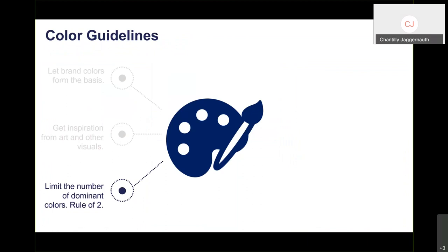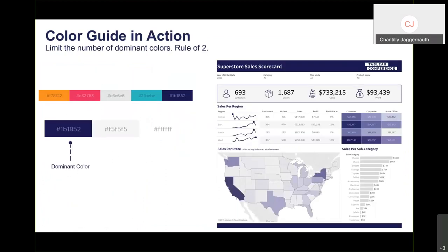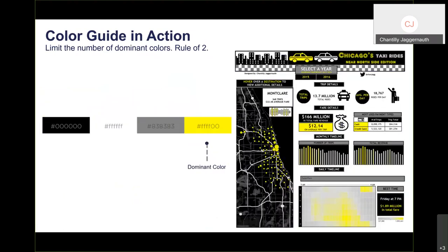Next, limit the number of dominant colors — I typically only use two. Even if a client provides five brand colors, I select only one as the dominant color for the visualization rather than trying to incorporate all of them. Use neutral colors — grays, whites, blacks — to fill the rest. I've seen too many cases where developers try to use every single brand color; it's okay not to. One pop of color is fine; anything more than two starts adding noise and confusion.